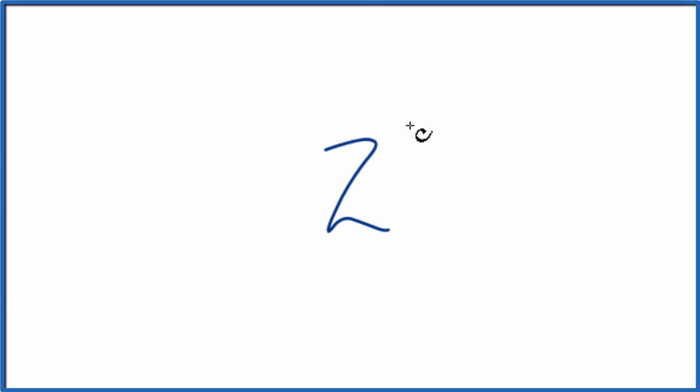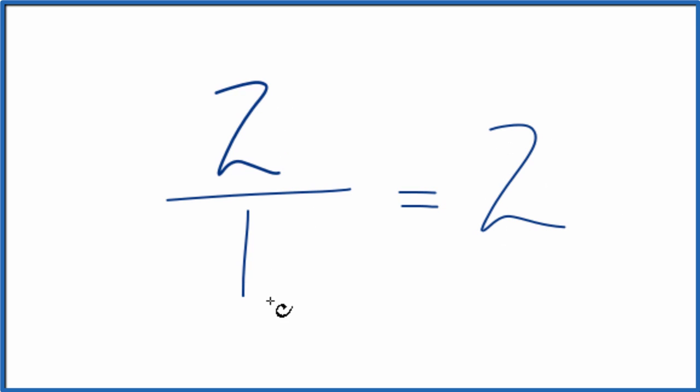Let's find three equivalent fractions for 2, the whole number 2. It's helpful to think about 2 as just 2 over 1, so we have a fraction here. 2 divided by 1 is just 2, so 2 over 1 and 2 are the same thing.